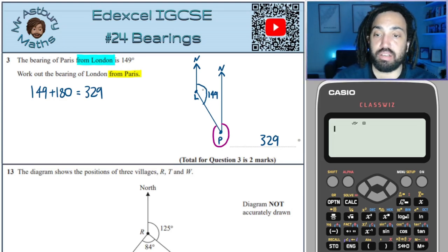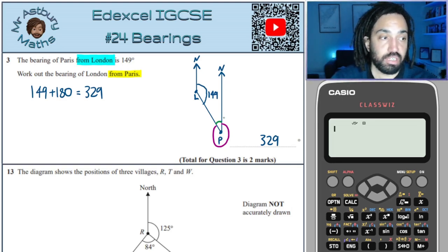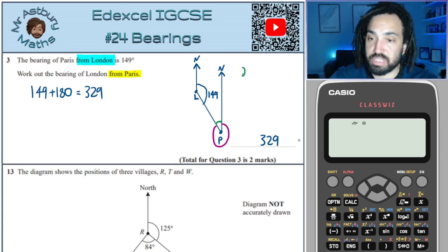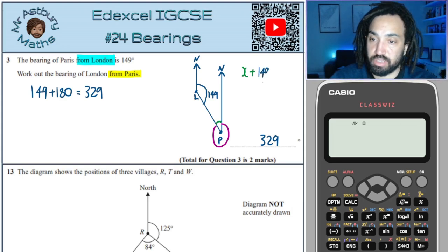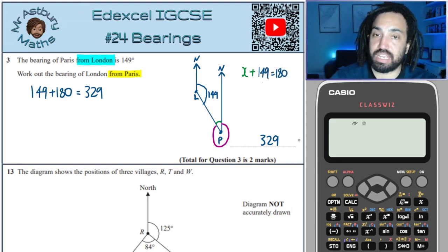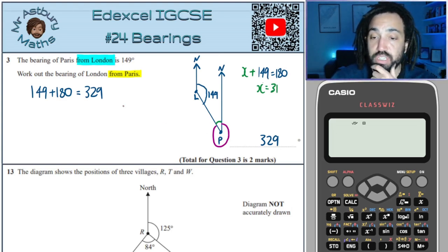And if I draw a north line up from Paris, then the angle that I would need on the bearing from Paris this time means I would start at Paris and I would go around clockwise again until I hit this line to take me back up to London. Well, how could I work out then what that purple angle is? Well, this green angle in here must add with 149 to make 180 because these two lines are parallel, which means the angles inside are co-interior, which means they must add to make 180 degrees.